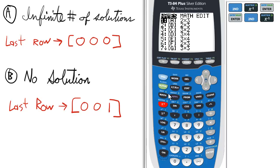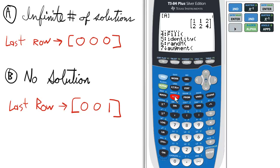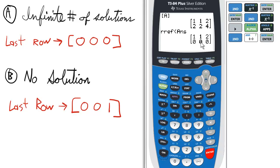if I go to matrix, math, choose RREF, and matrix A, the last row is all zeros. So, that's an infinite number of solutions.